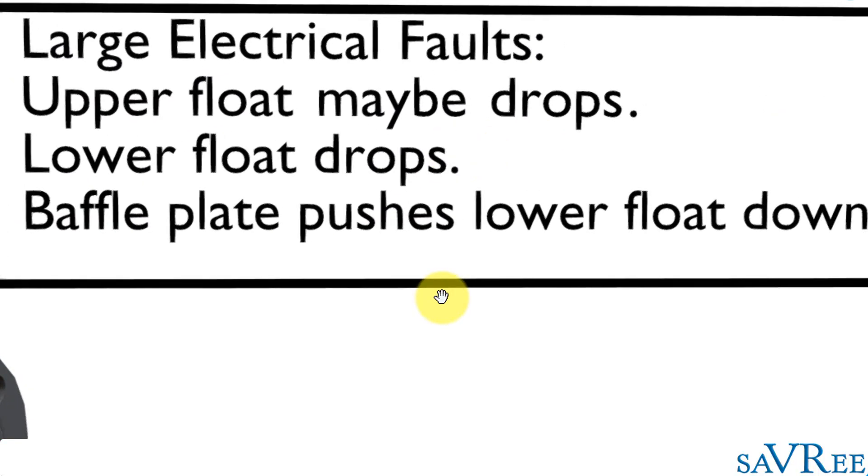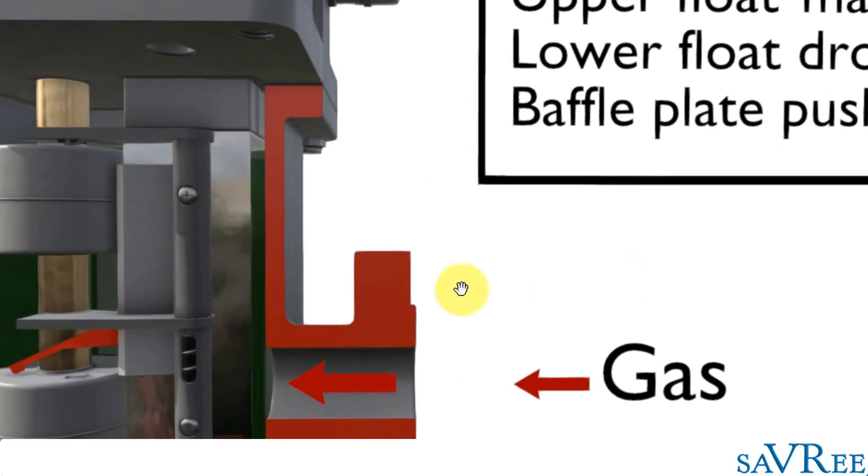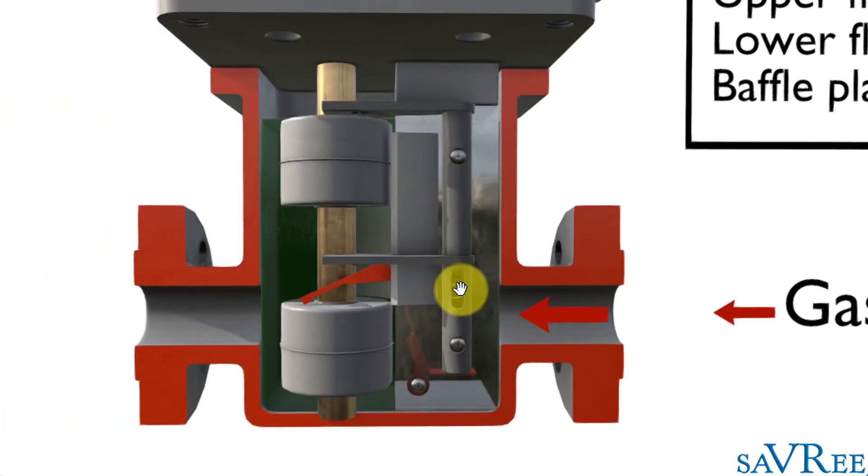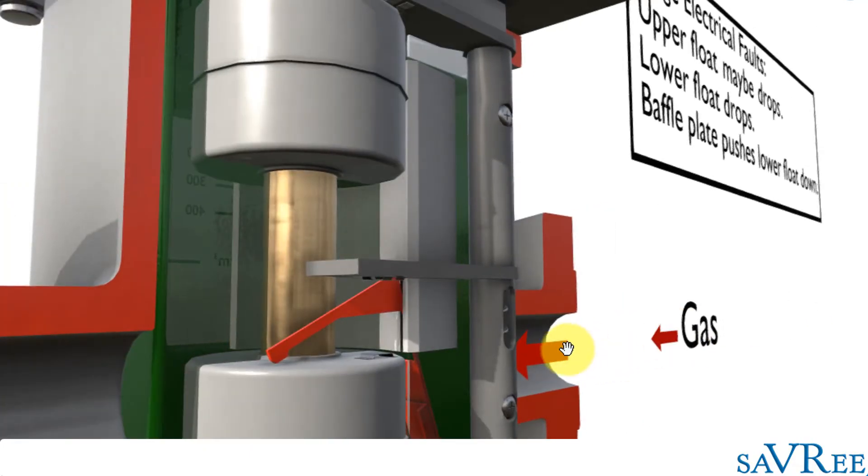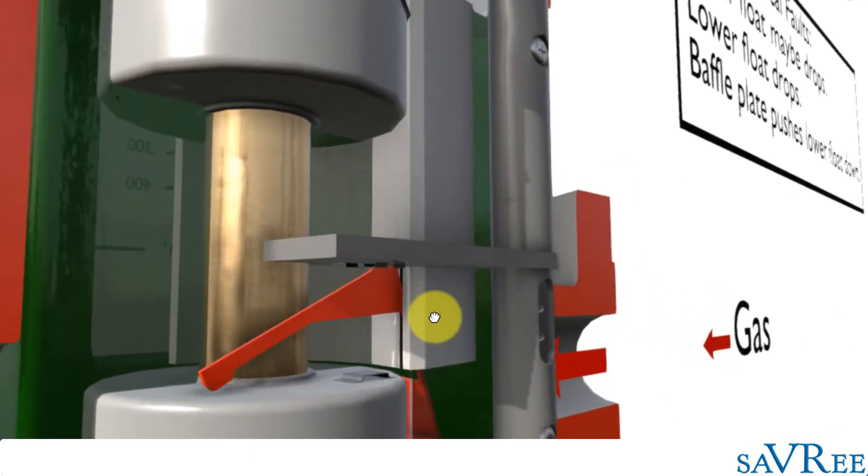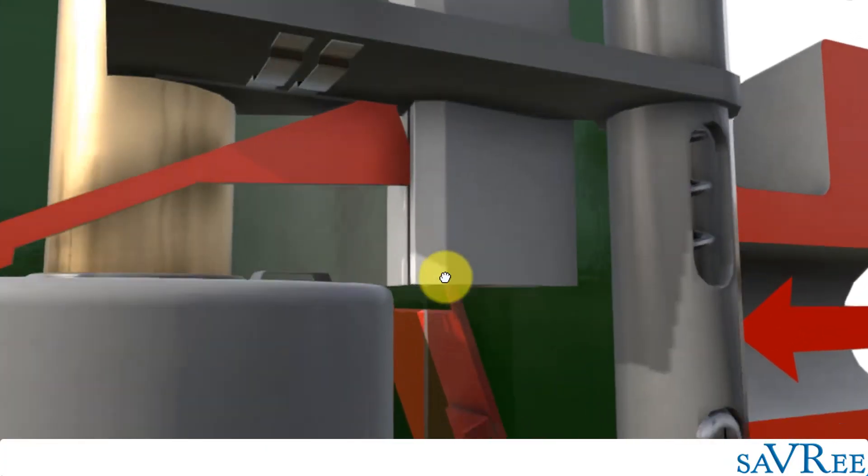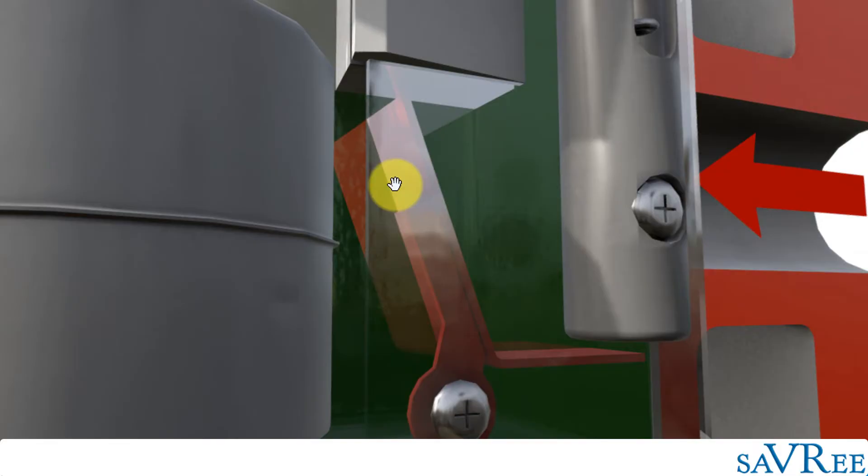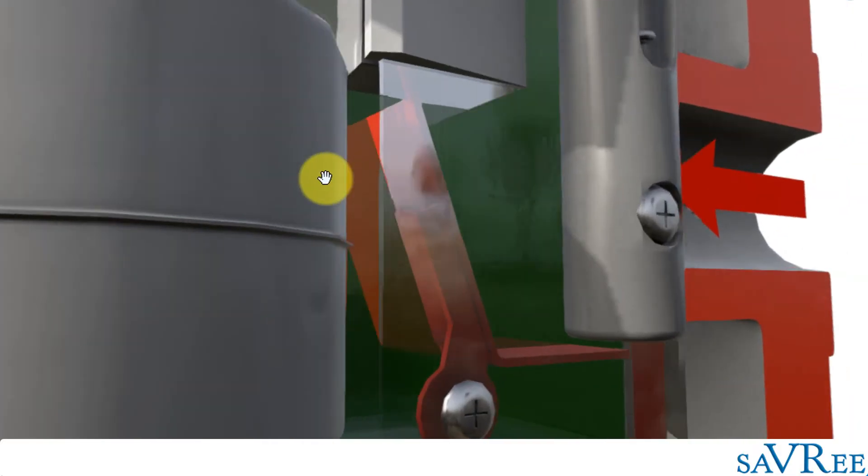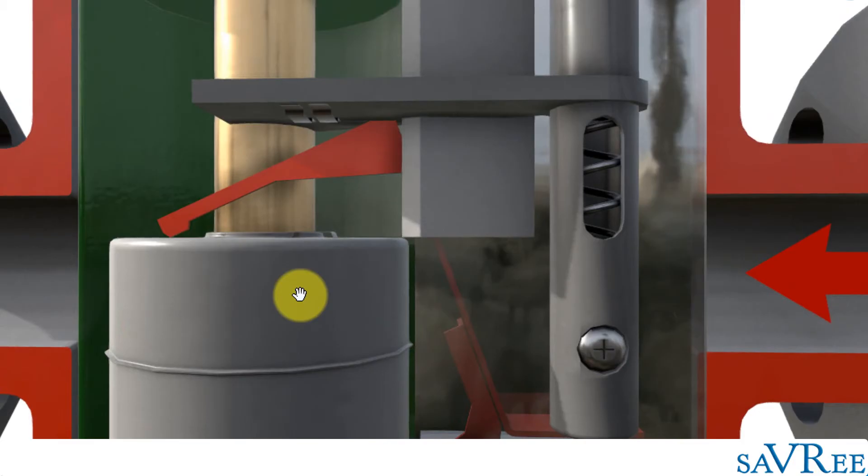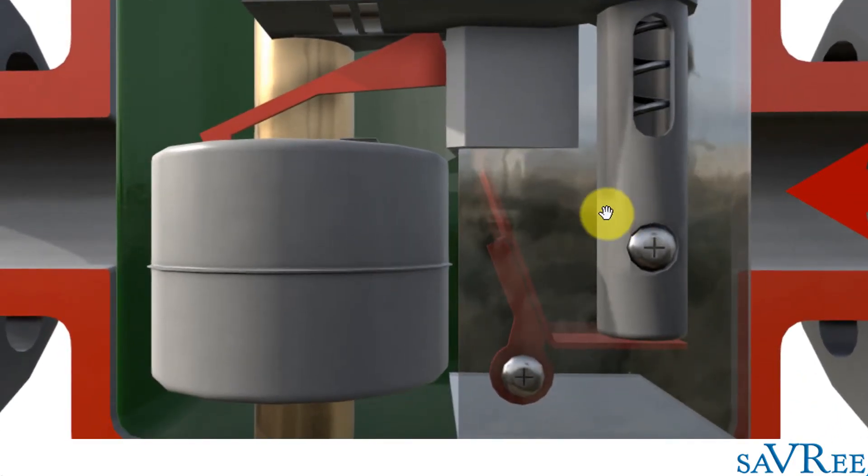Let's imagine we have large electrical faults. This large electrical fault has created a lot of gas in a very short amount of time. Because this gas is racing down the pipe, it's going to impact with this baffle plate here. It's going to push against that baffle plate and then force the lower float down. So massive inrush of gas pushes the baffle plate down, pushes the lower float down. And then that is going to shut down the transformer.